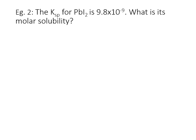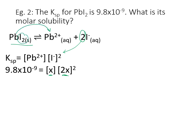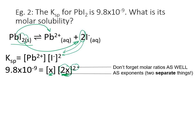Now let's try one where we're given the Ksp and we solve for molar solubility. This is lead(II) iodide, which has a very low Ksp — not very soluble. Start with the dissociation equation: solid on the left, ions on the right. Write the equilibrium expression — don't forget the coefficient of 2 for iodide becomes an exponent. The Ksp is 9.8 × 10⁻⁹. We let the lead ion concentration equal x; then iodide is 2x, because for every lead ion you make, you make two iodide ions. There are two separate things: the concentration is doubled because two iodide ions form, and because the coefficient is two, there is also an exponent of two.